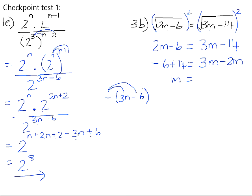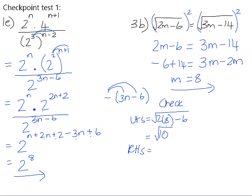So that just leaves us with m is equal to 8. If we check that solution, the square root of the left-hand side is equal to the square root of 2 multiplied by m minus 6. 2 times 8 is 16. 16 minus 6 is 10, so that leaves you with the square root of 10. The right-hand side is equal to the square root of 3 times m minus 14. 3 times 8 is 24 minus 14 is 10, so you're left with the square root of 10. So m equals 8 is a valid solution.